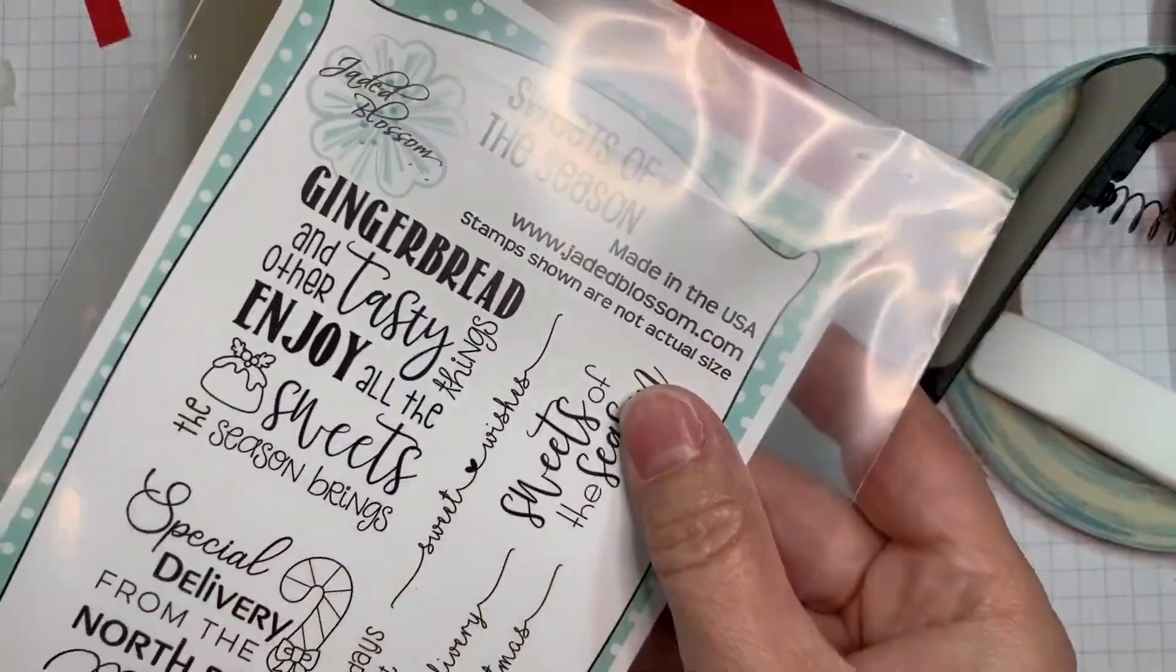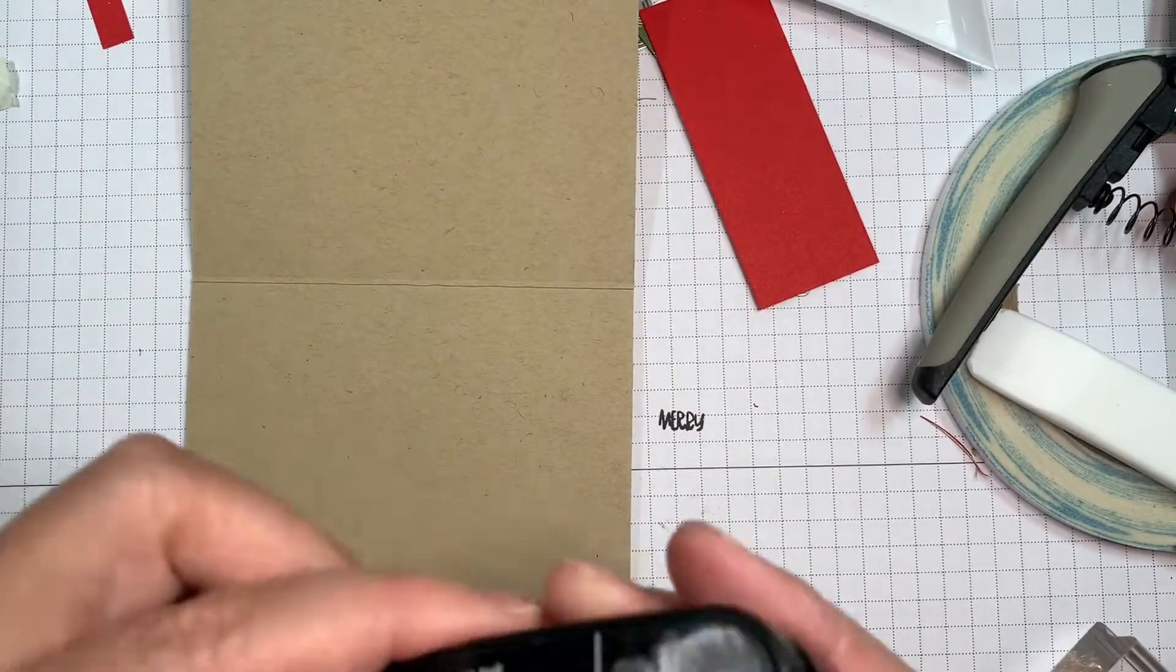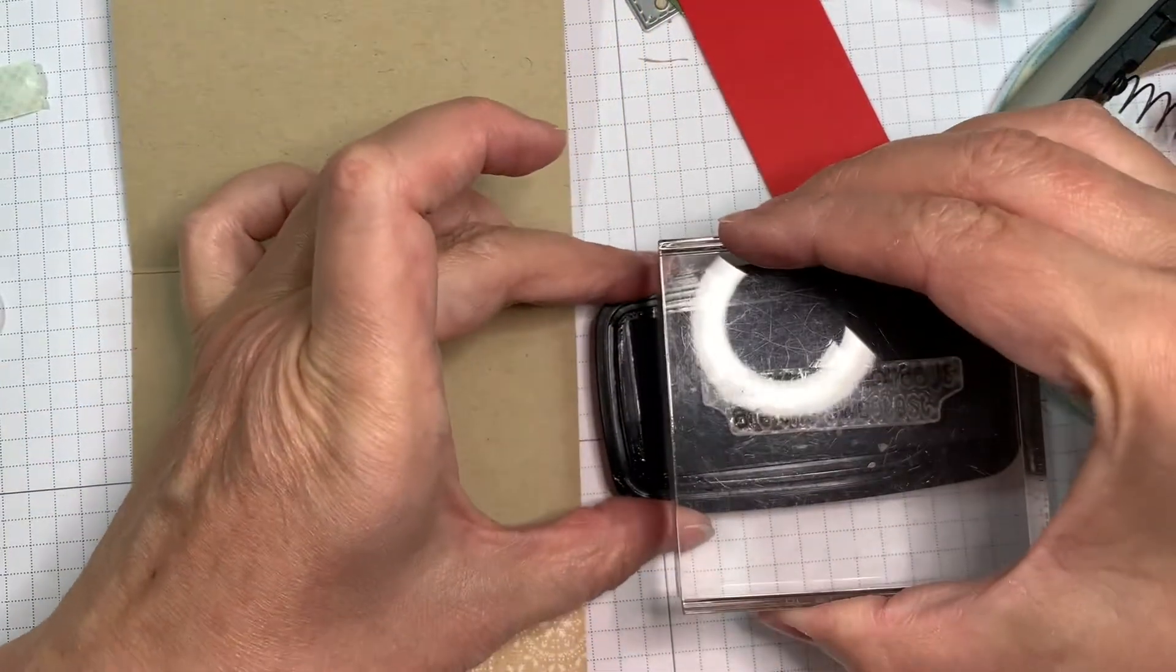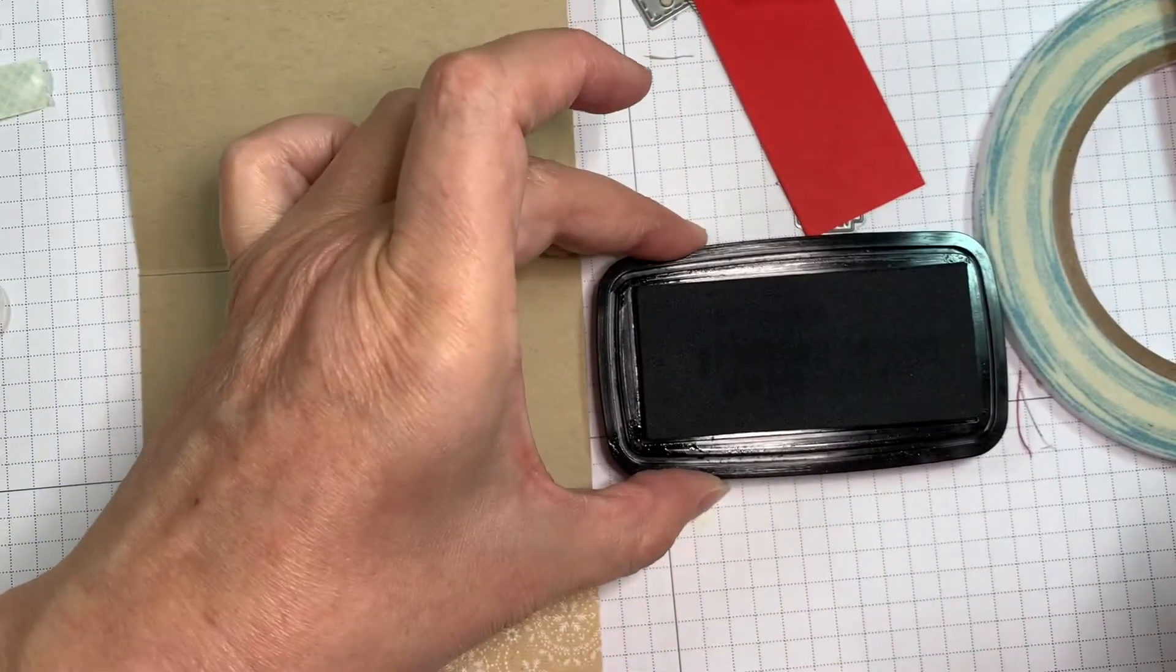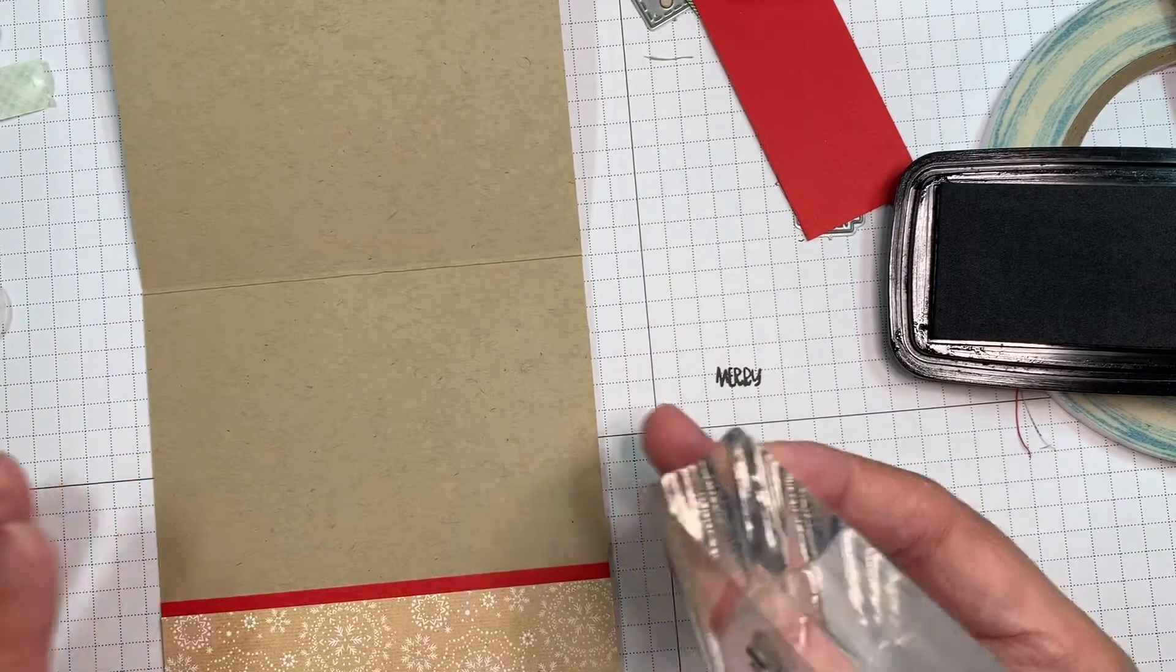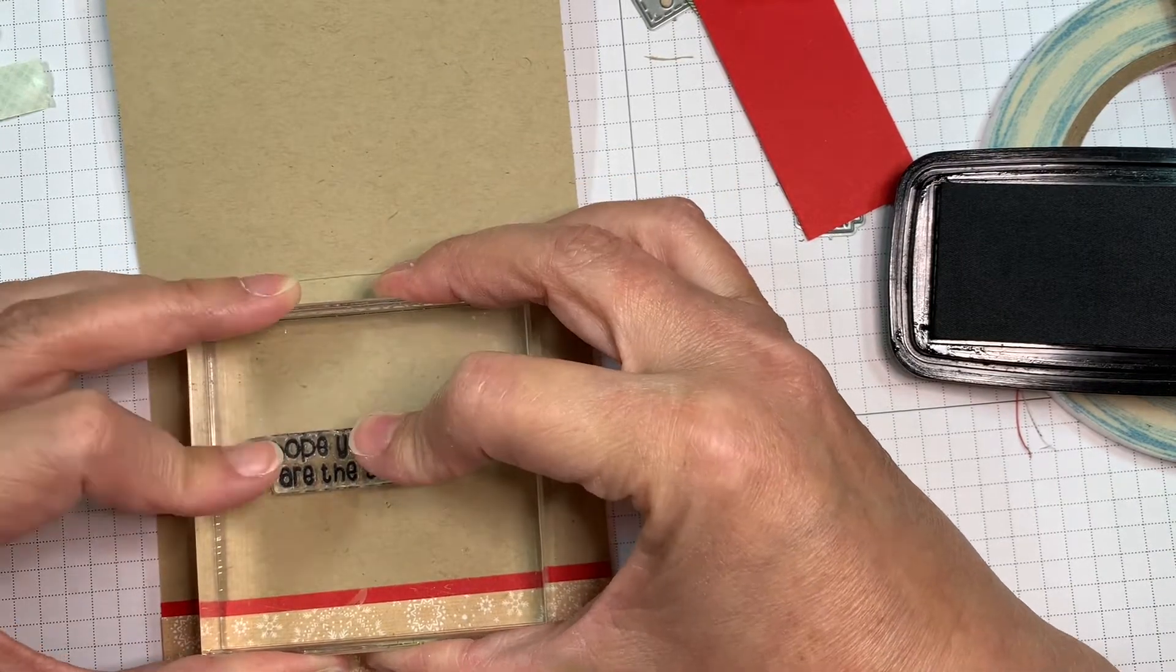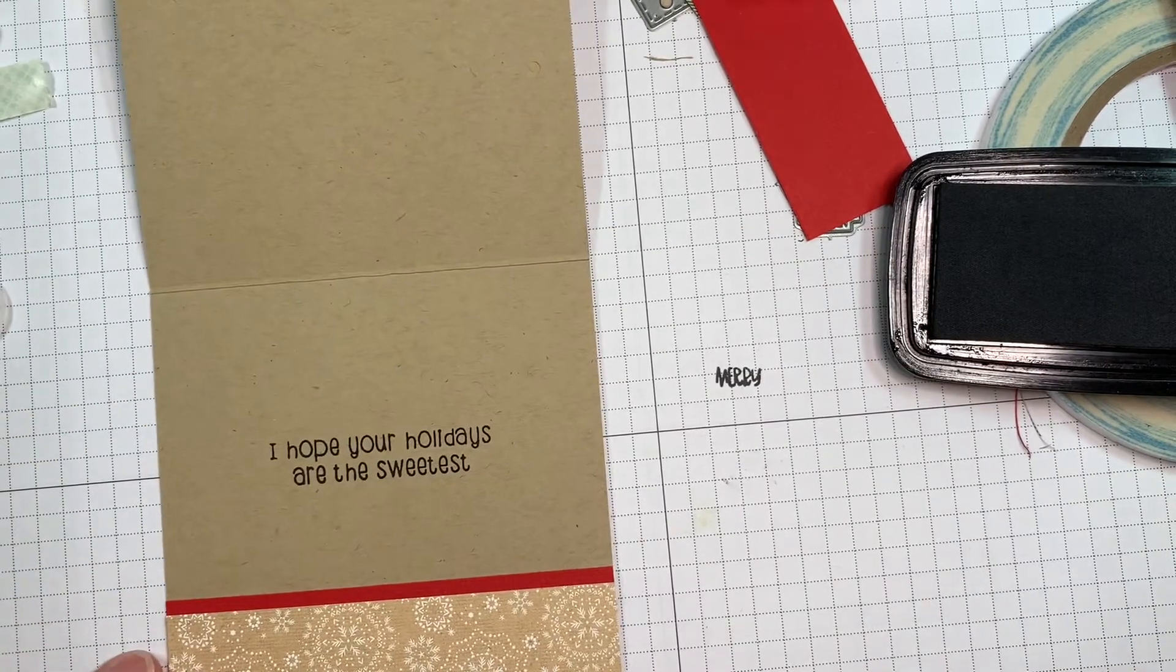So now I'm pulling out a stamp from Sweets of the Season. And I'm going to use Hope Your Holidays Are the Sweetest, to kind of play off on the candies. And now I'm going to stamp that sentiment using the same VersaFine Clair Nocturne ink. And I've got everything in my way. I'm crafting in a little, little tiny spot. I'm going to try and line that up. I'm deciding where it's going to go. And there we go. Just going to stamp that down.